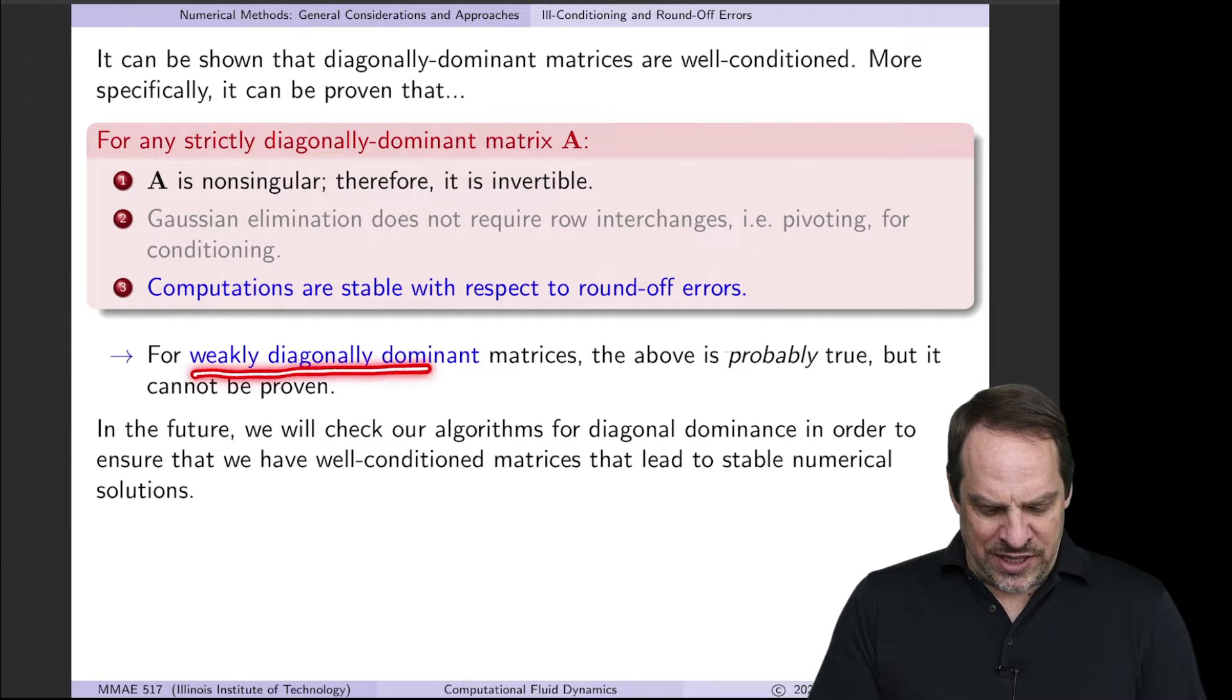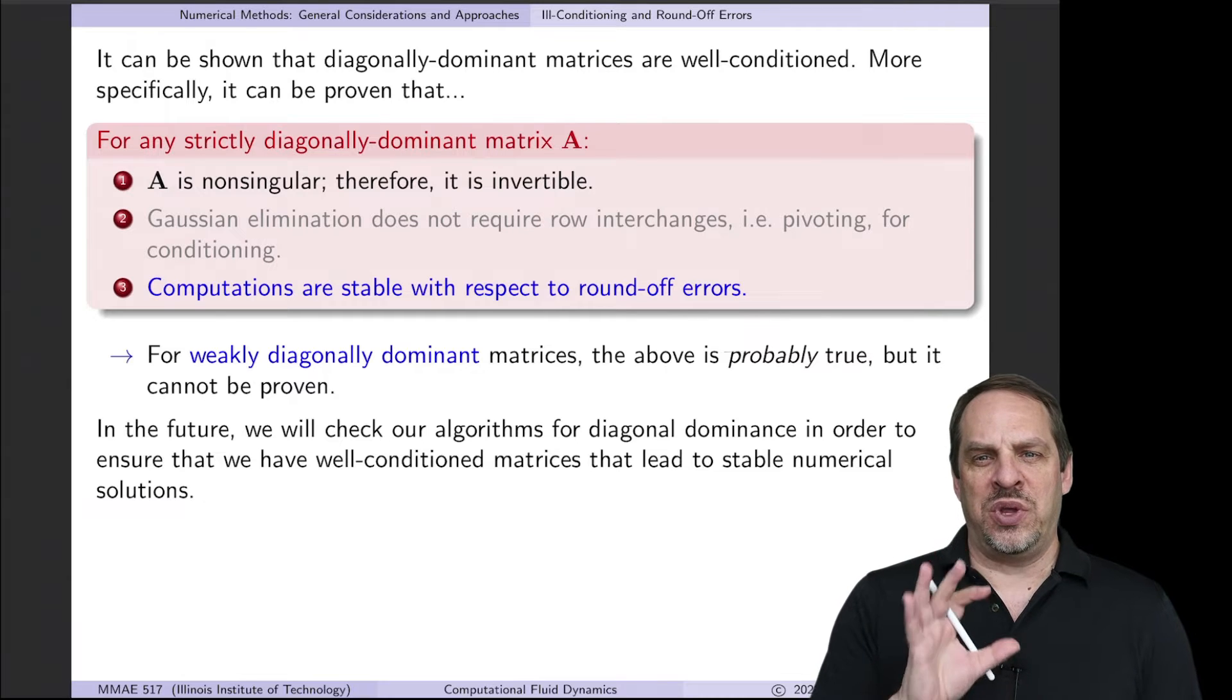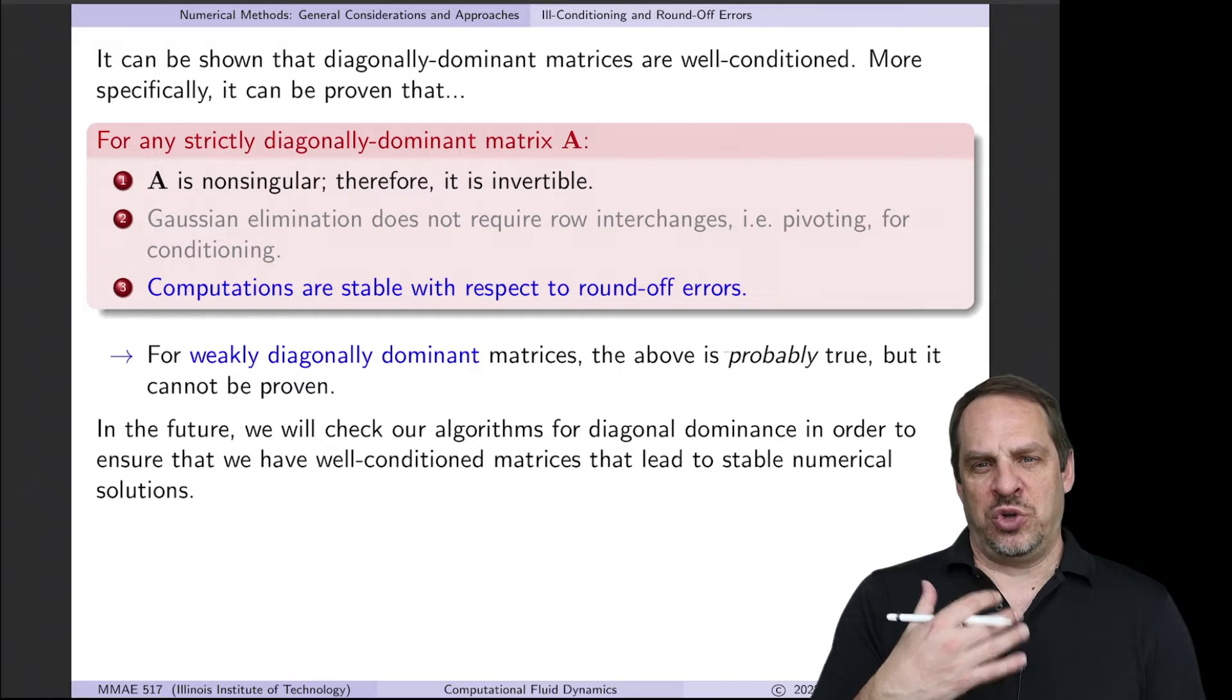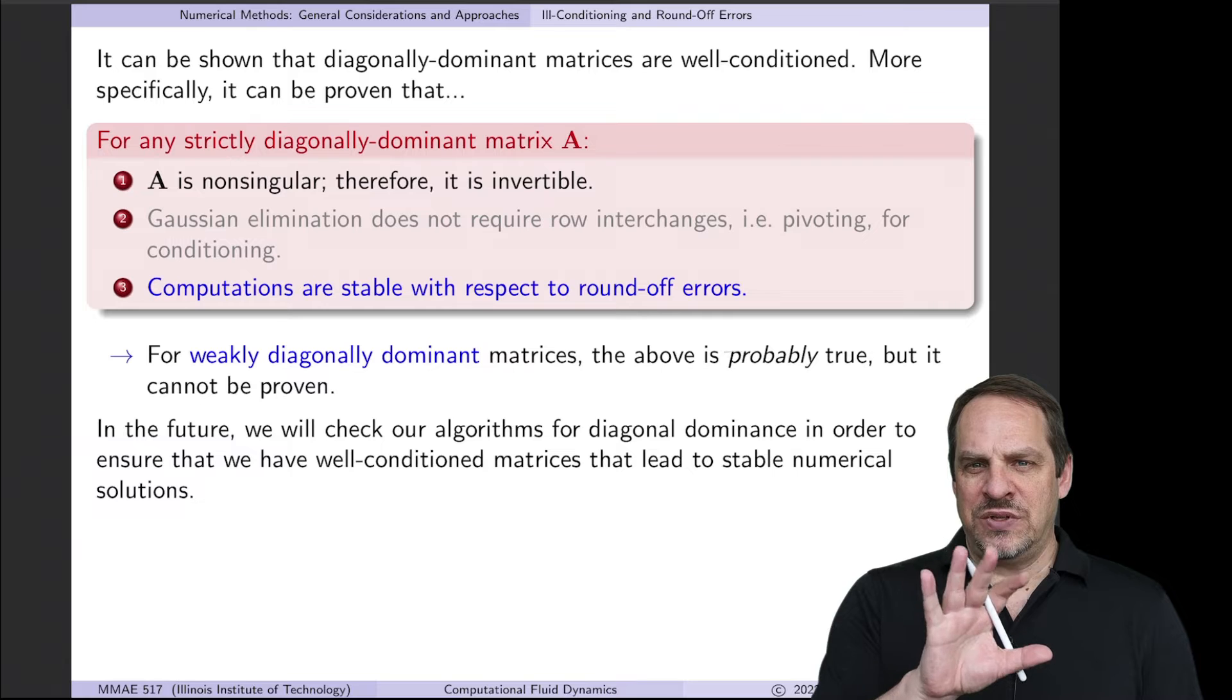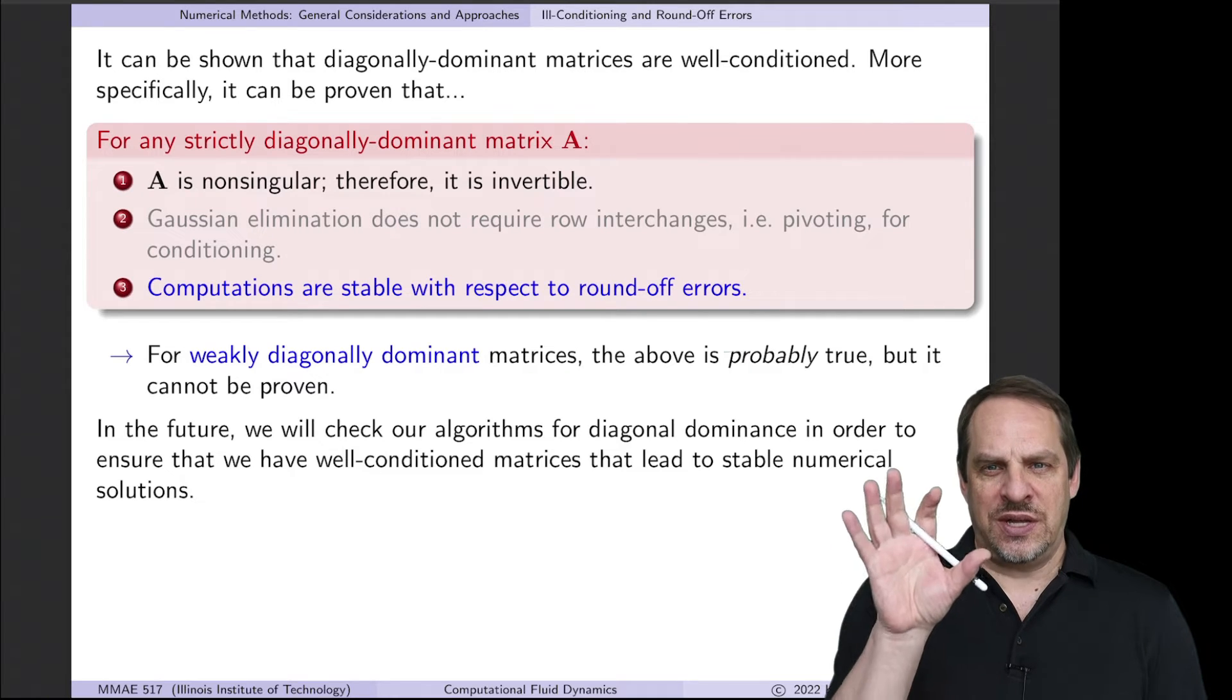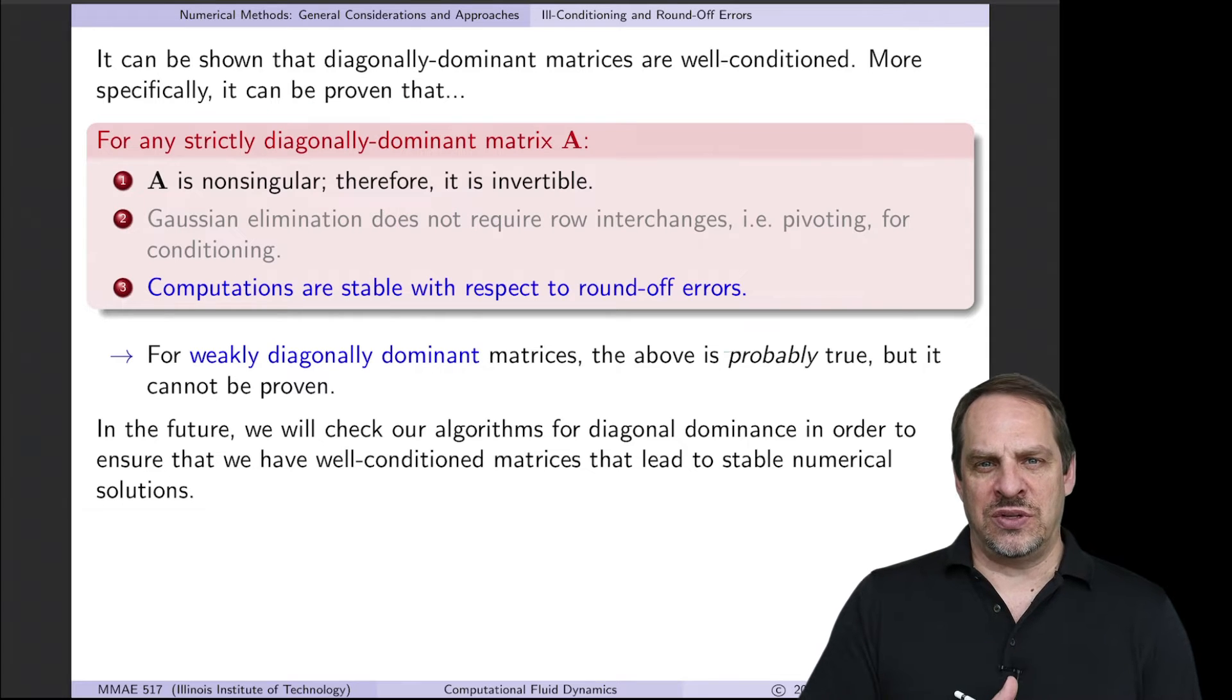Now if it's only weakly diagonally dominant, then those things are normally true in practice, but we can't prove that they have to be true. So usually in practice, weak diagonal dominance is sufficient for these properties that we want, but they could only be proven for the case where it's strictly diagonally dominant. So again, it doesn't give us any more information than the condition number. In fact, it doesn't tell us how much of an effect in terms of loss of accuracy we're going to experience, as is the case with the condition number, but it's a much simpler test, and it's the test that we'll be using throughout the remainder of the videos for the most part.